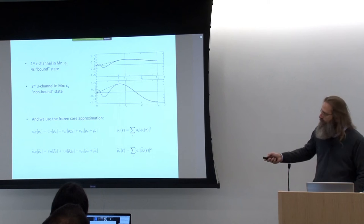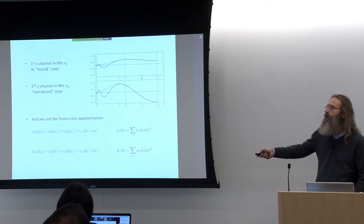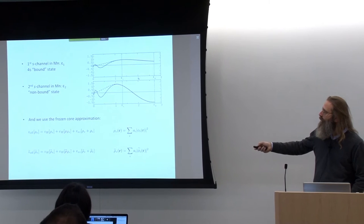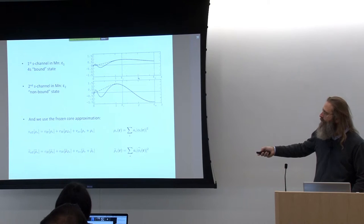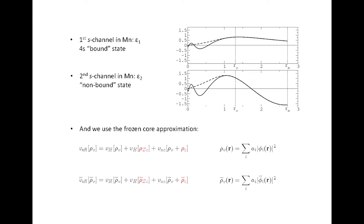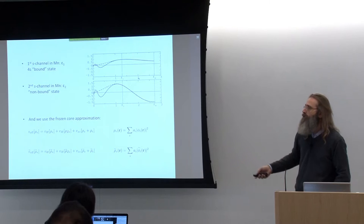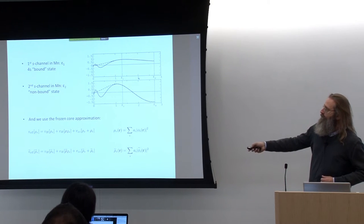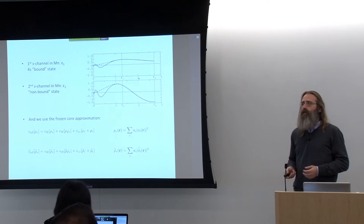This is a point worth making — it came up at the coffee break. In the PAW method, in terms of our local functions, we can express the charge density in a particular way. Inside the PAW spheres, we can do the same in terms of the pseudized partial waves. Those particular densities are then used to represent the local potential on these radial grids.